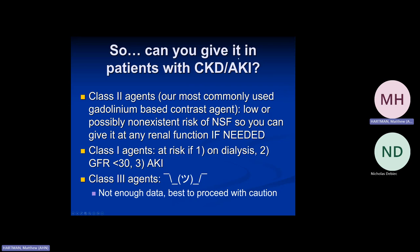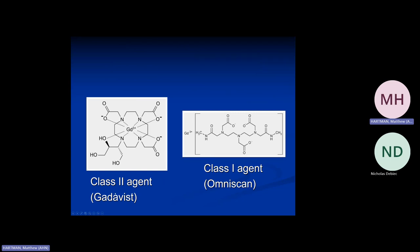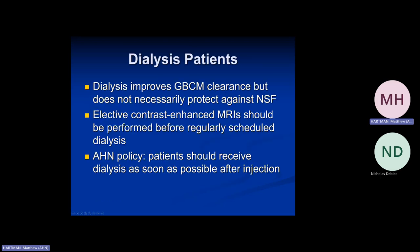Can you give gadolinium contrast to patients with chronic kidney disease? Different contrast agents have different risk profiles — class two agents, most commonly used at our institution, have lower risk. If renal function is fine, no problem. If the GFR is lower it becomes a risk-benefit discussion. For dialysis patients similarly: our policy is they can get contrast but should get dialysis as soon as possible after injection, if benefit outweighs risk and no other study is available.